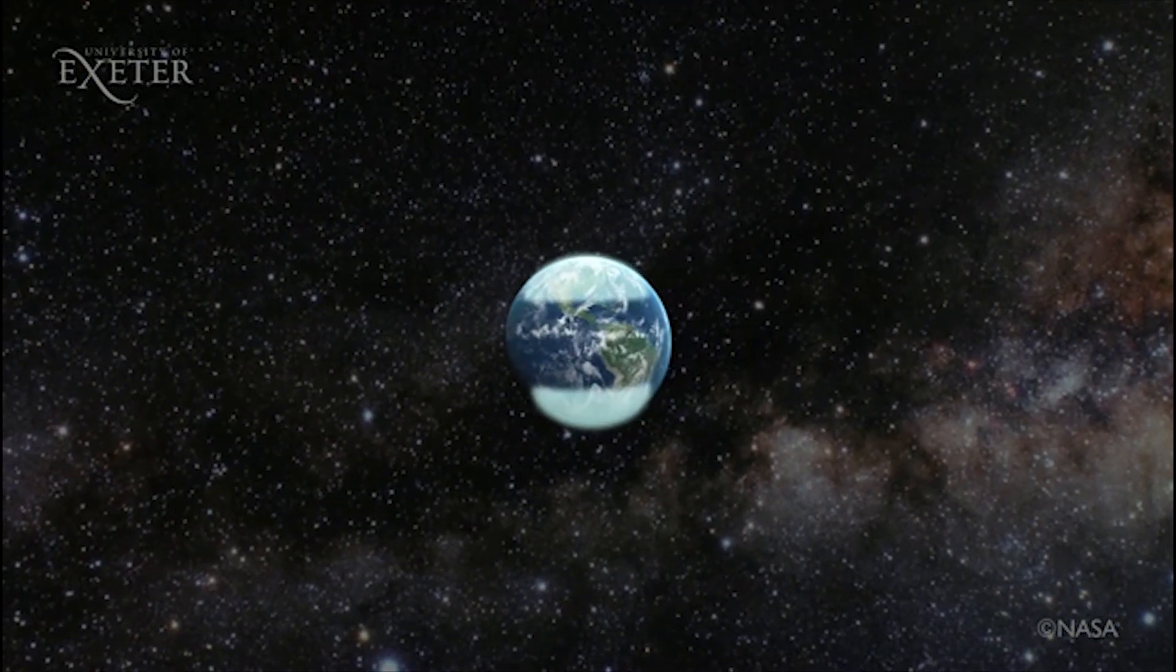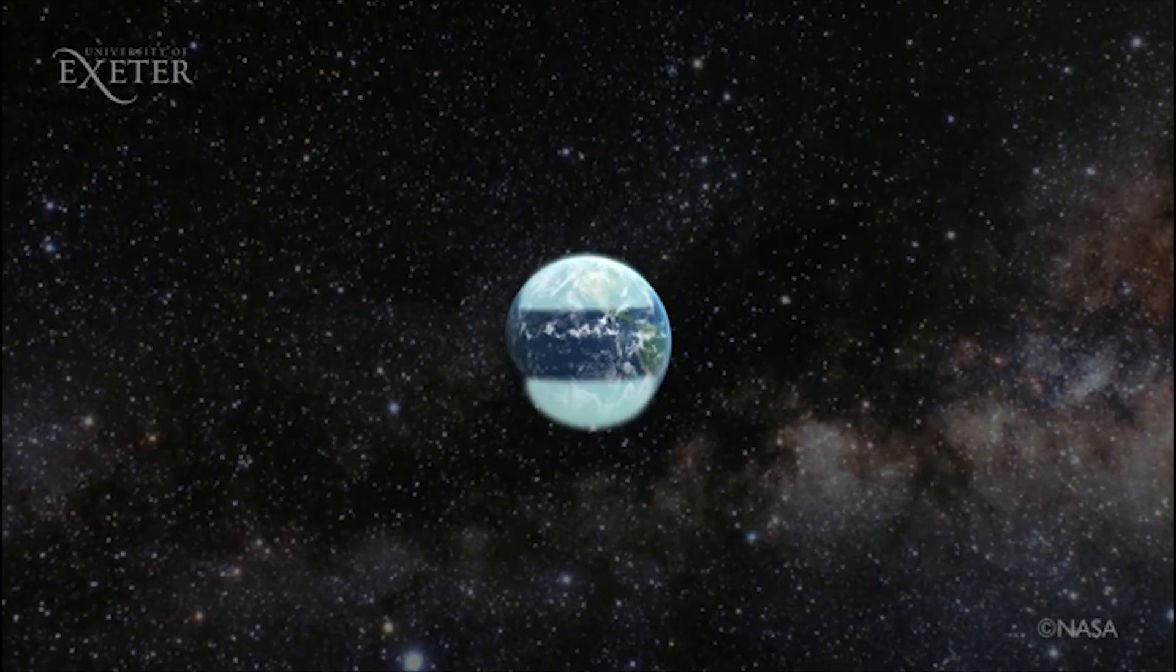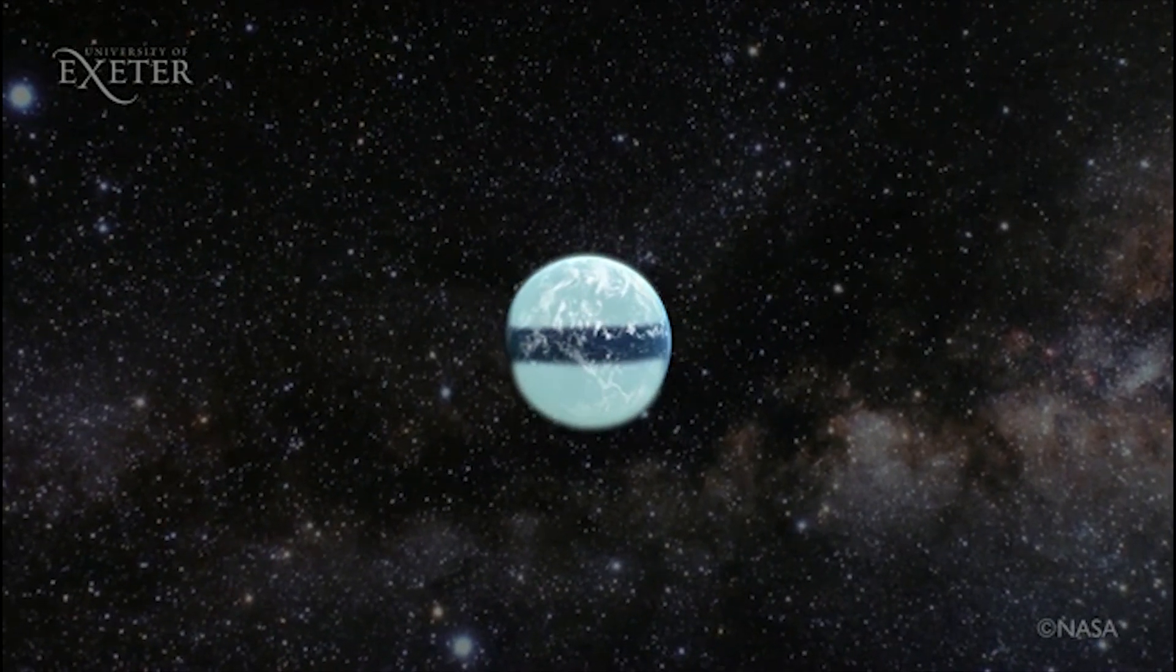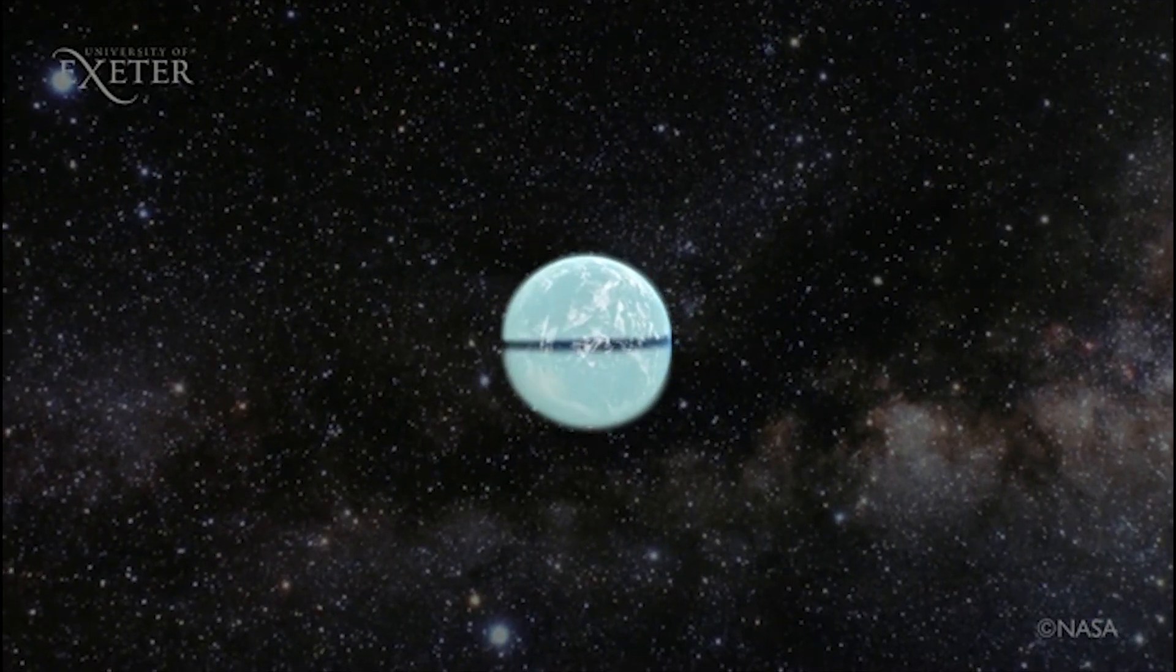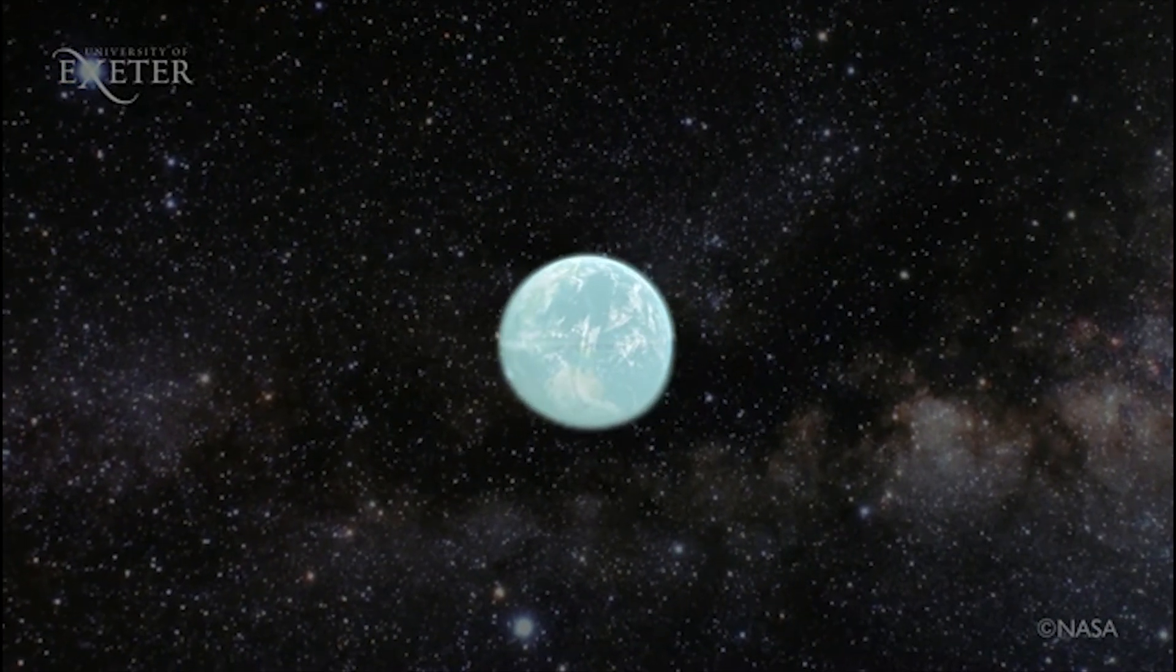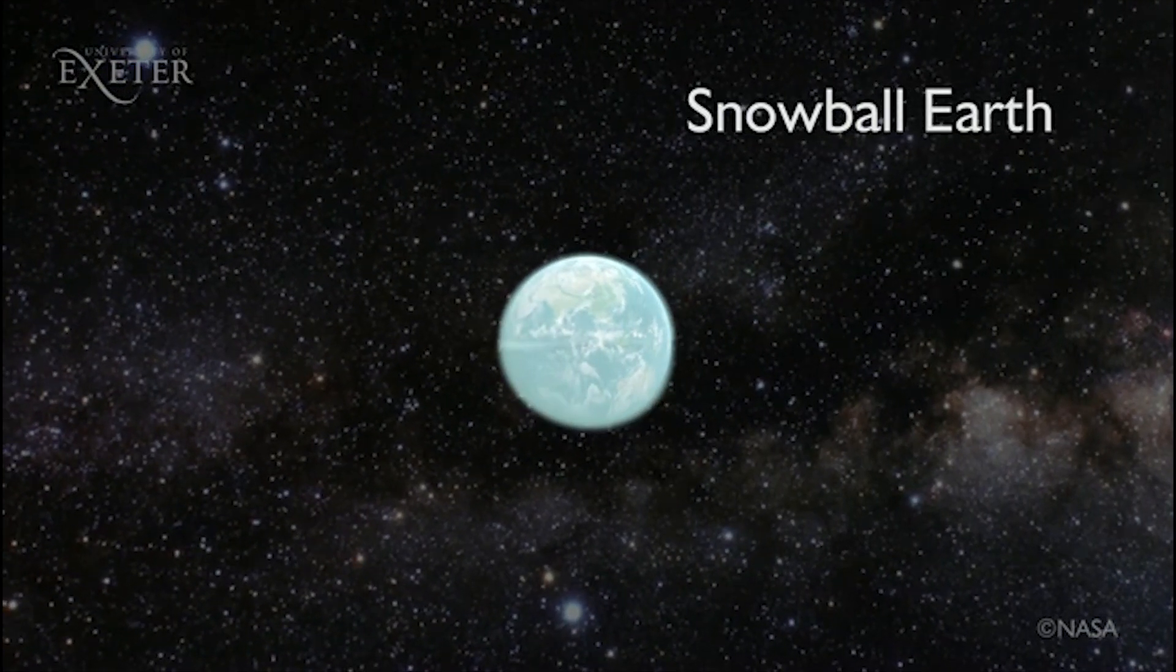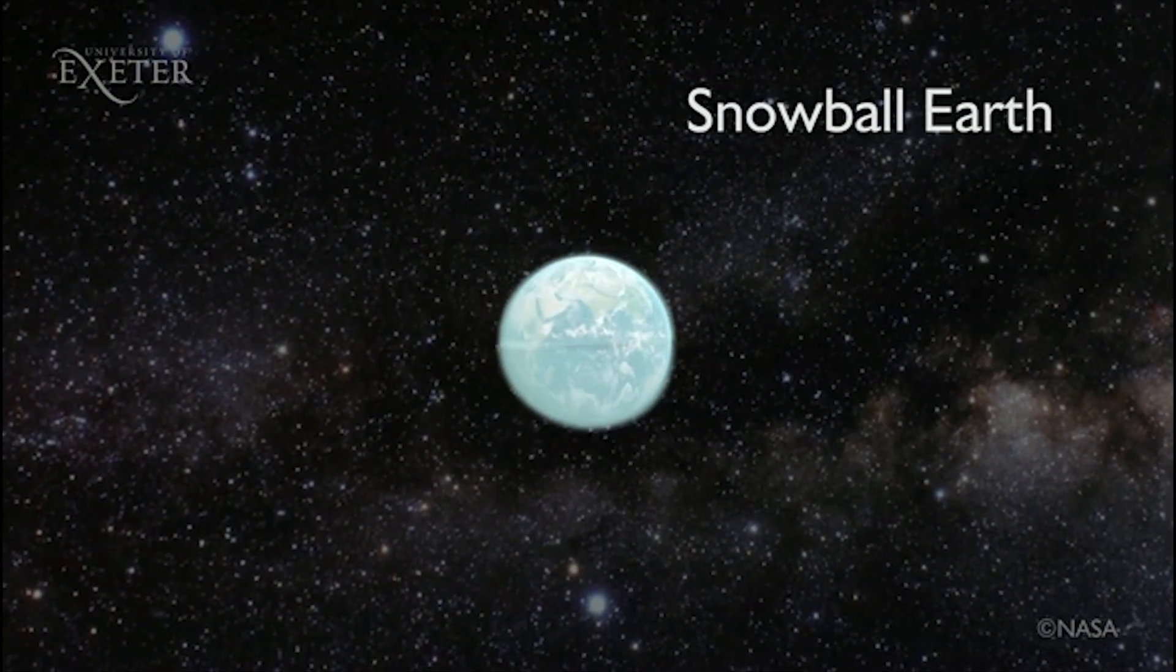However, if cooling is sufficient for ice cover to reach around 30 degrees of latitude, the tropics, a tipping point is reached, a point where the process of amplification of ice cover runs away. Then we get a Snowball Earth, with the ice closing up at the equator.